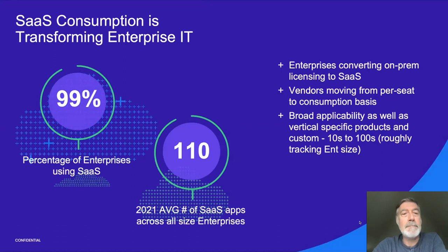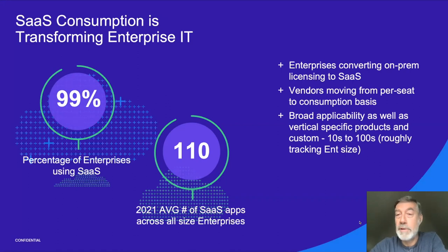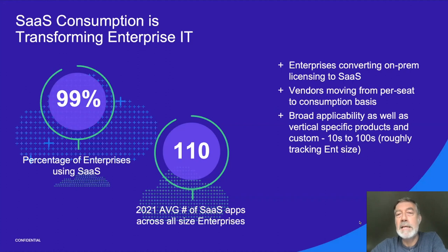I'm showing you a couple of statistics here that represent saturation statistics as well. 99% of enterprises now use some form of SaaS. The average number of SaaS applications that an enterprise uses is actually pretty high, and generally the number tracks the size of the enterprise — the larger the enterprise, the more applications. Slowly but surely, enterprise IT is converting on-premise software licenses to SaaS licenses, and SaaS vendors are encouraging that by moving the consumption model to on-demand instead of seat licensing.